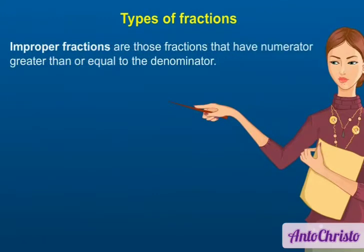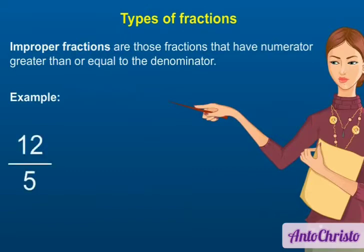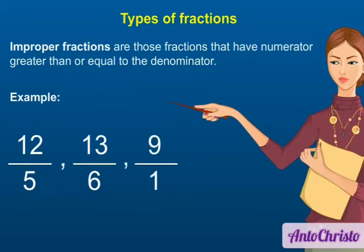Improper fractions are those fractions that have numerator greater than or equal to the denominator. Examples: 12/5, 13/6, and 9/1 are improper fractions.